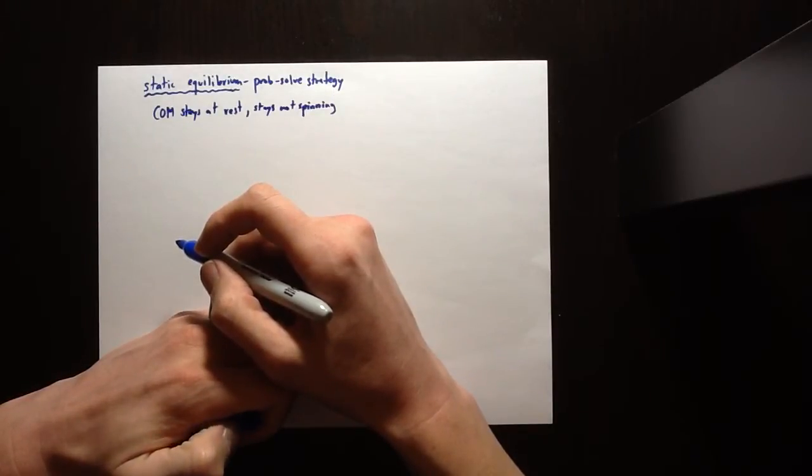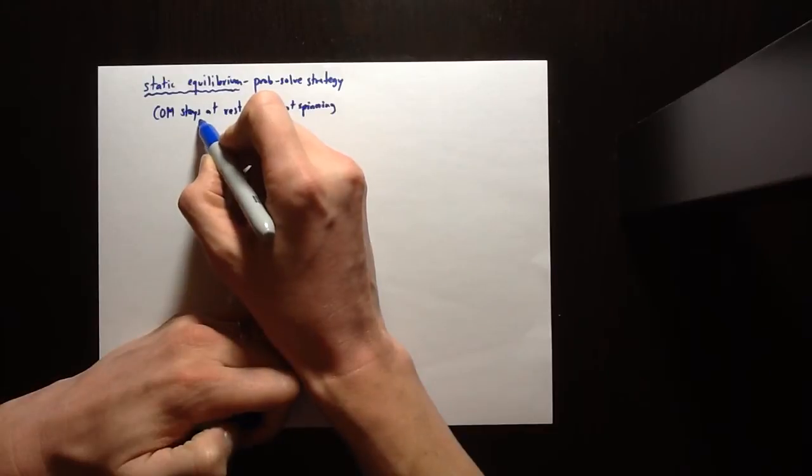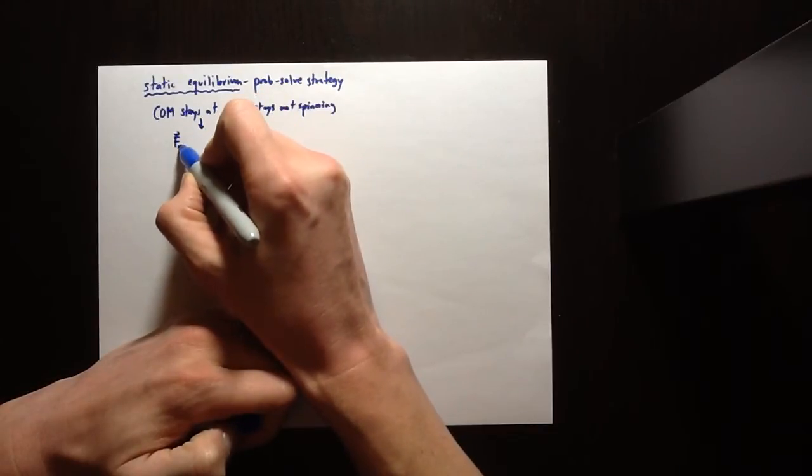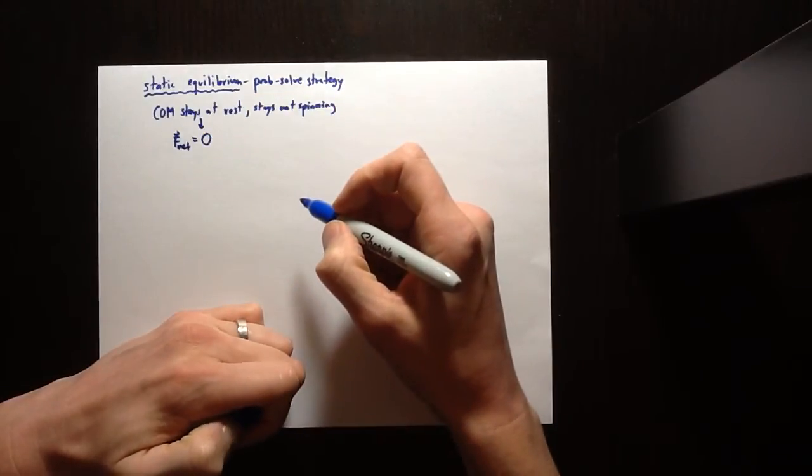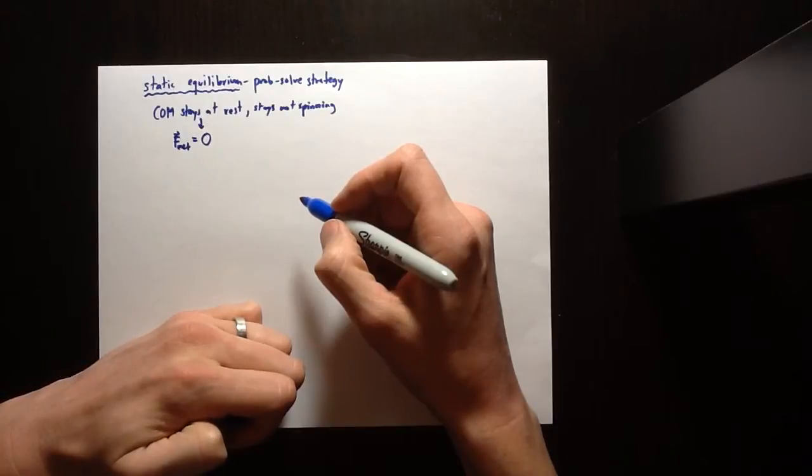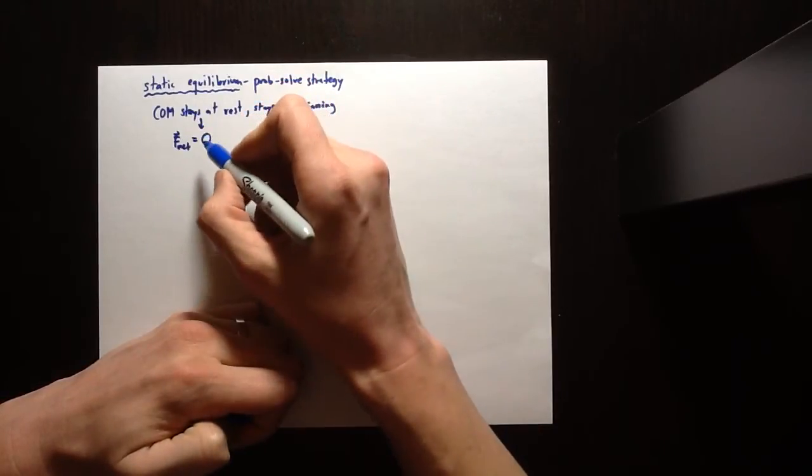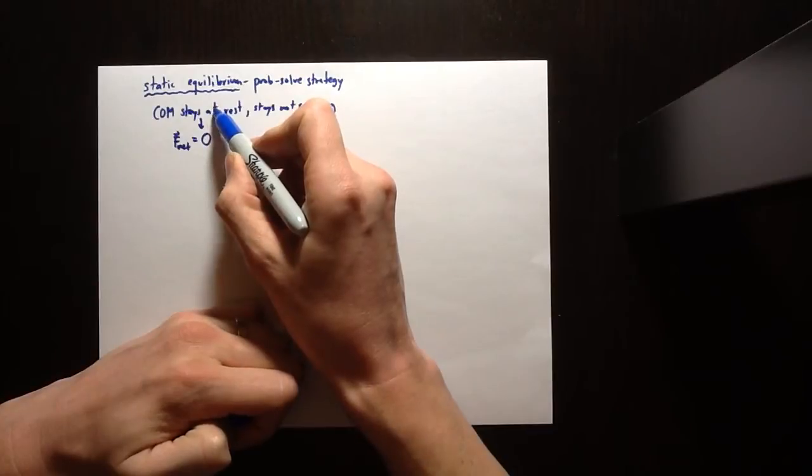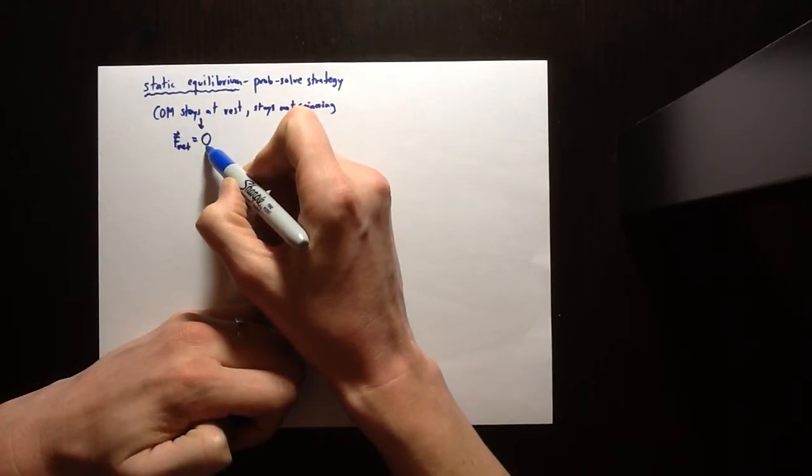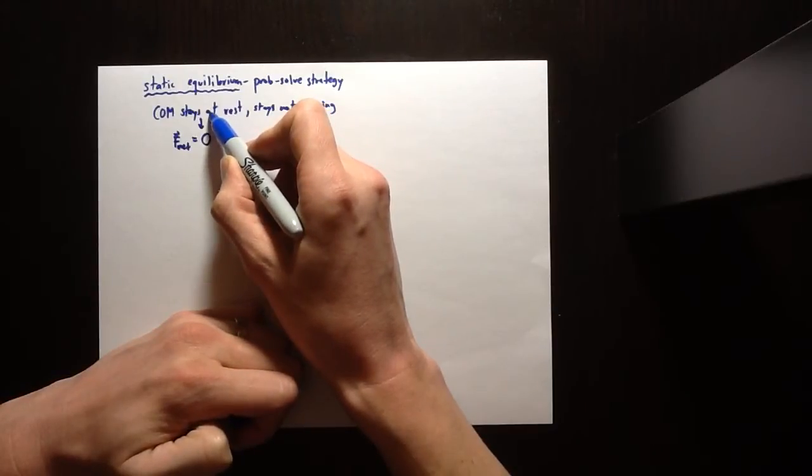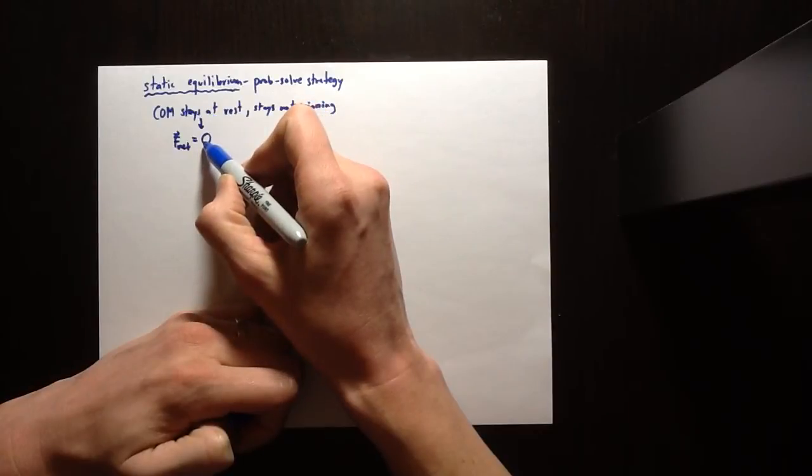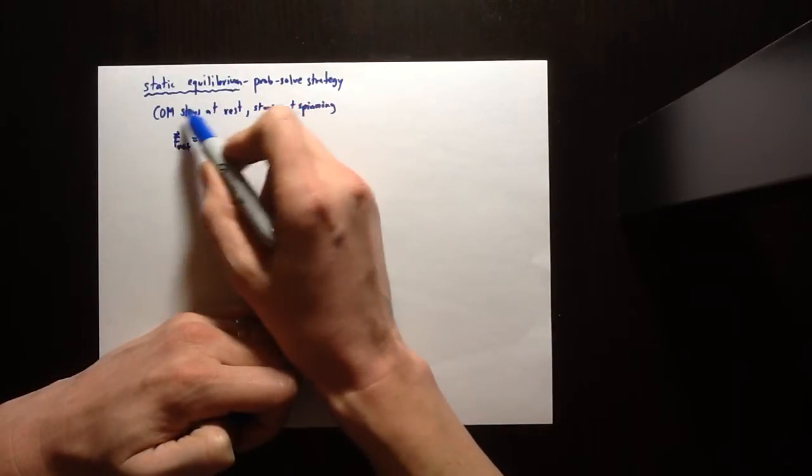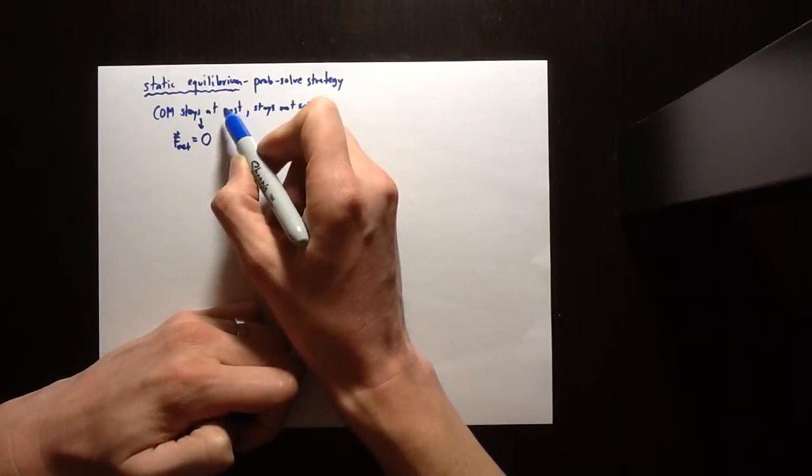But again, if it's a bridge or a building, that's a very good feature is that it stays put. So if the center of mass stays at rest, that tells us that the net force on the object is zero. Remember that the net force being zero tells us about the center of mass acceleration being zero. And I should also remind you that this logic only works in this direction. If you know the center of mass stays at rest, you know the net force is zero on the object.